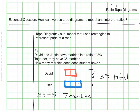Since David has two of these, I know he must have 14 marbles, and since Justin has three of these, I know he must have 21 marbles. A quick check: 14 plus 21 does make the 35 total. I'm able to use this tape diagram to see how many marbles they each have, even though the ratio I started with was a simplified version of the real data.